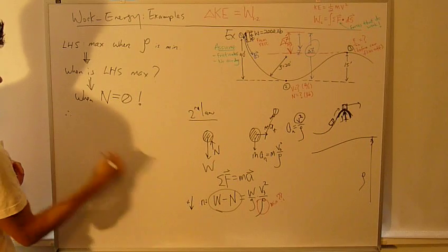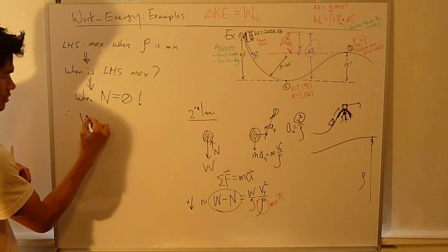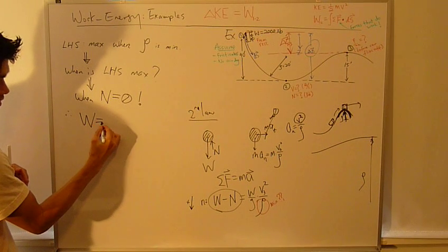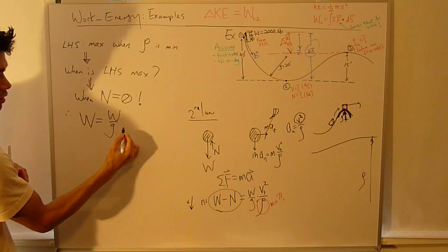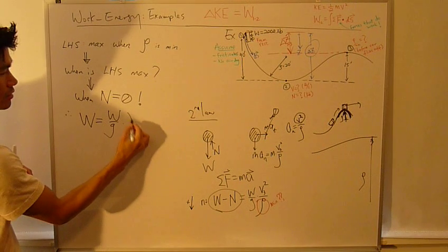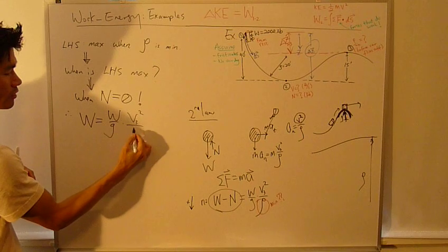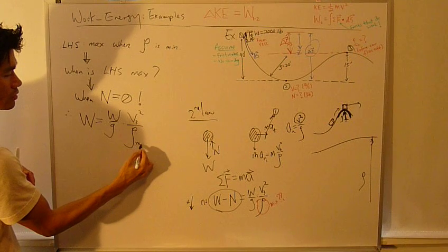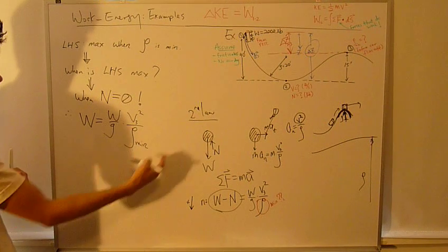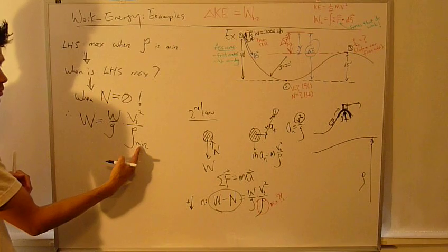This equation then becomes weight equals weight divided by g times v3 squared divided by row. This instant gives you the minimum row when N is zero.